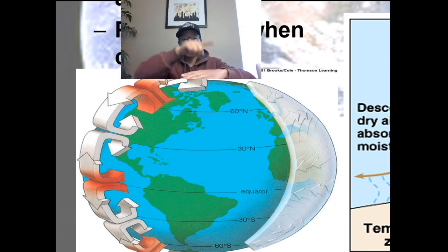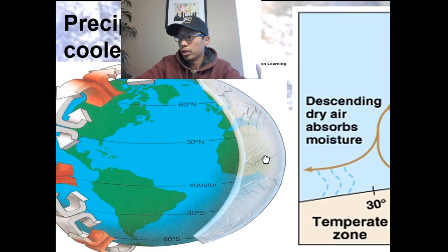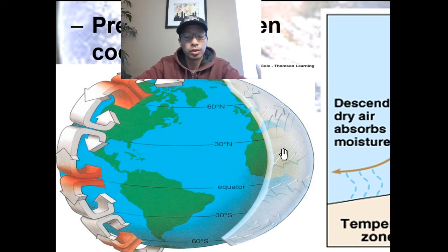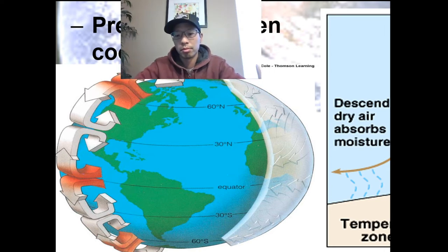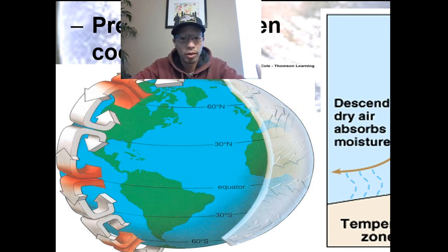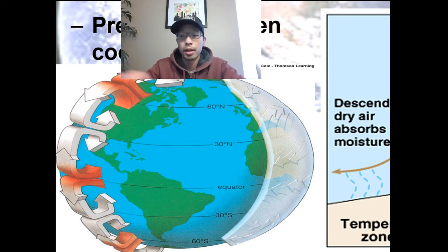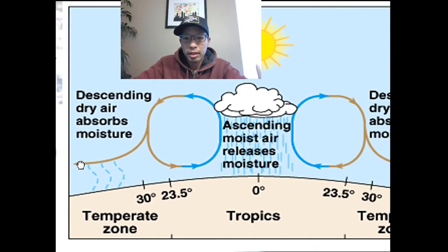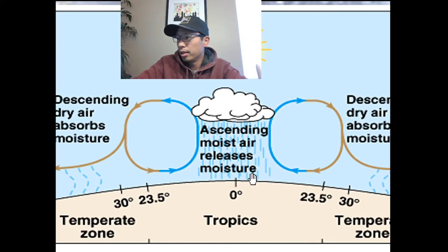That circulation of air really drives our weather patterns. When you hear meteorologists on the news talking about high pressure and low pressure systems, it's not random — they can predict weather based on how these air currents are moving. Weather and climate are not random; they're driven by how different parts of the earth heat up and how some parts cool down.